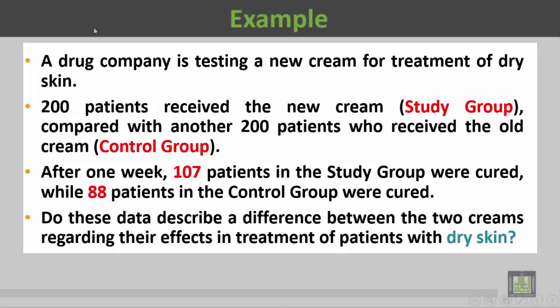في هذا المثال بنعرض لشركة أدوية أنتجت كريما جديدا لعلاج جفاف الجلد. تم دراسة 200 مريضا مصابين بجفاف الجلد وتم علاجهم بالكريم الجديد، هذه هي مجموعة الدراسة (study group). المجموعة الأخرى احتوت على 200 مريضا آخرين مصابين بجفاف الجلد ولكن تم علاجهم بالعلاج التقليدي الكريم القديم، هذه هي المجموعة الضابطة (control group).